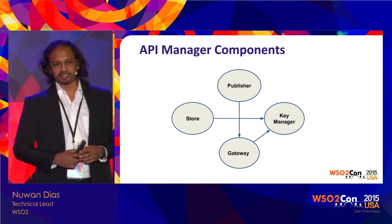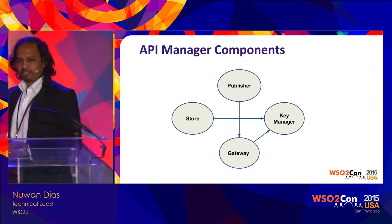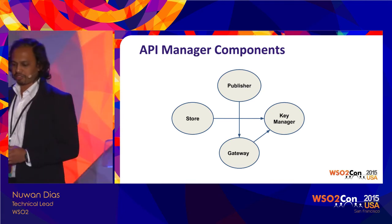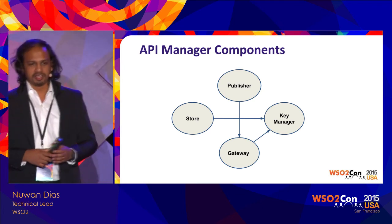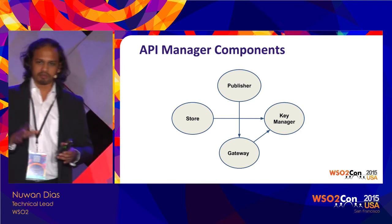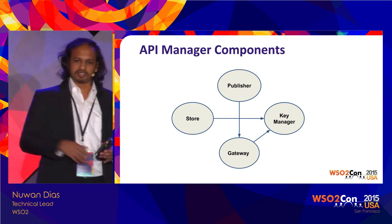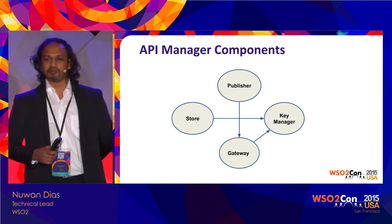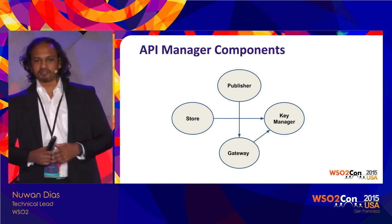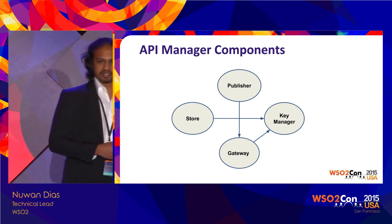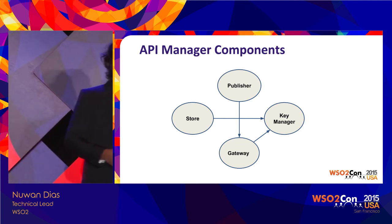To start off, I'll give a brief introduction into the major components of the API Manager. The API Manager has four major components: the Publisher, Store, Gateway, and Key Manager. The Publisher is where API designers and publishers design APIs, set the necessary policies, and publish them onto an API Store. The API Store is where application developers discover APIs, register themselves and their applications, and start consuming the APIs.